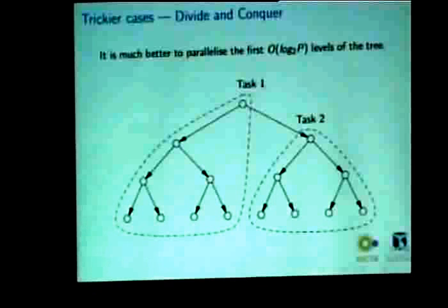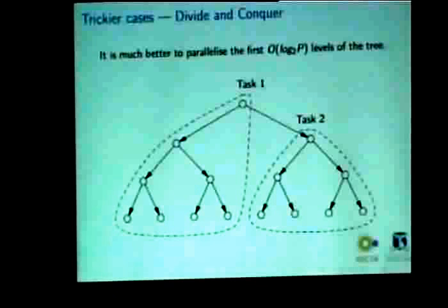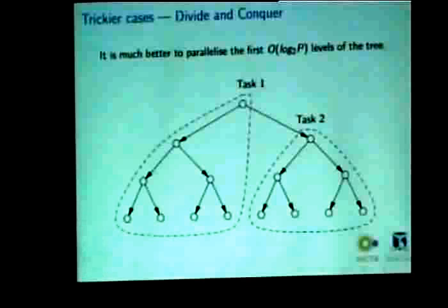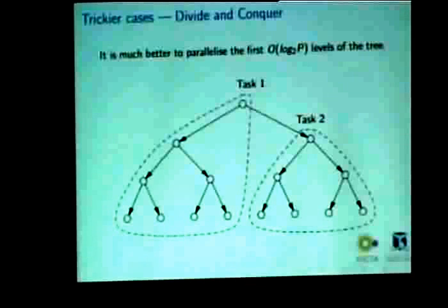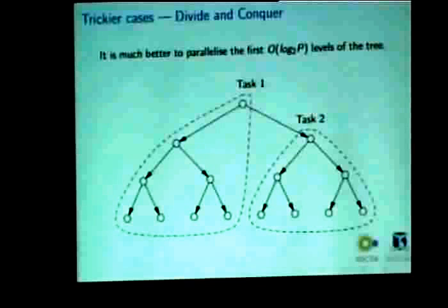And towards the bottom of the tree, you definitely want to just do things sequentially because you'll already have so much work to do. So yes, we avoid some of the overheads by using lighter weight primitives, but if we can avoid using lighter weight primitives at all and just go to sequential execution, then that's even better still.